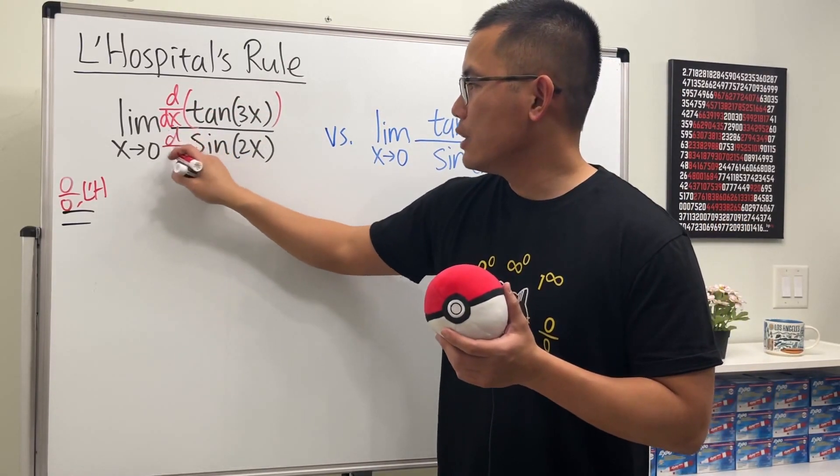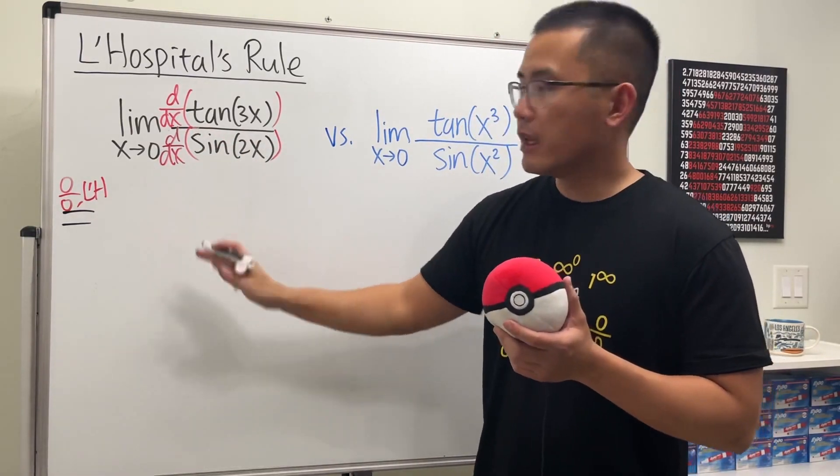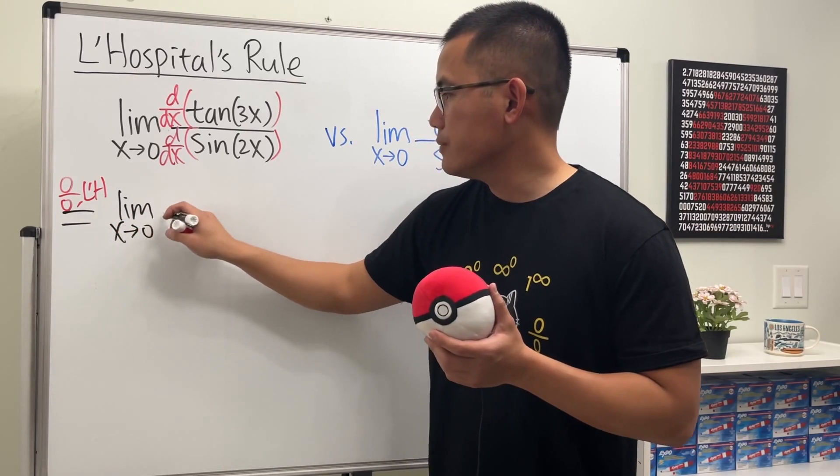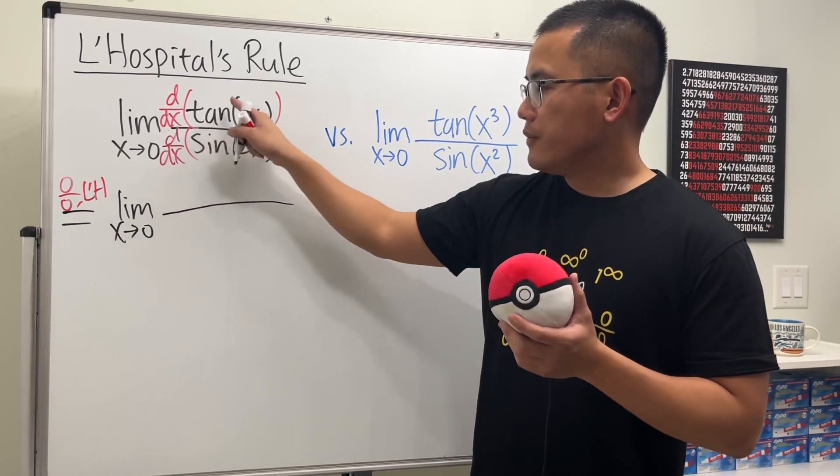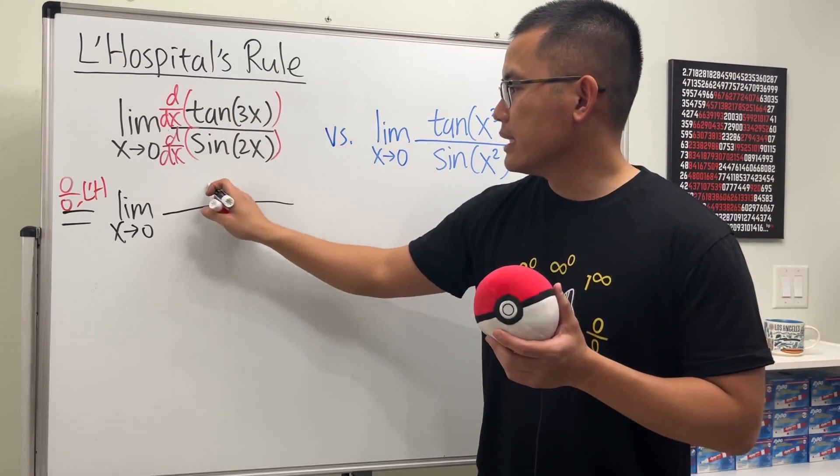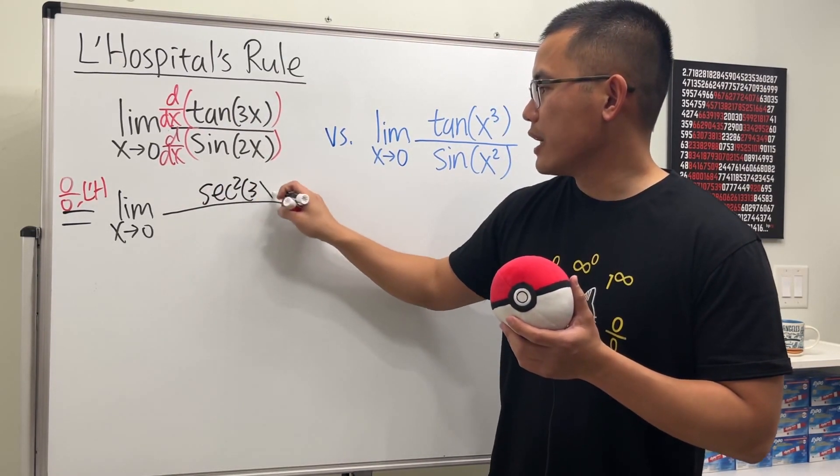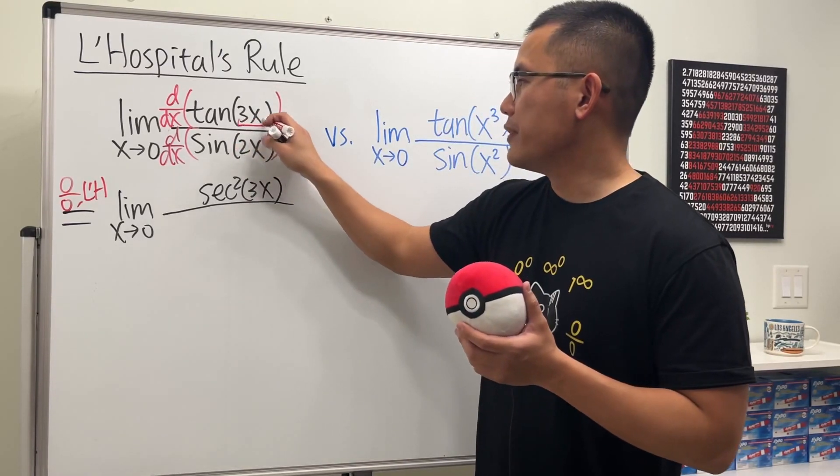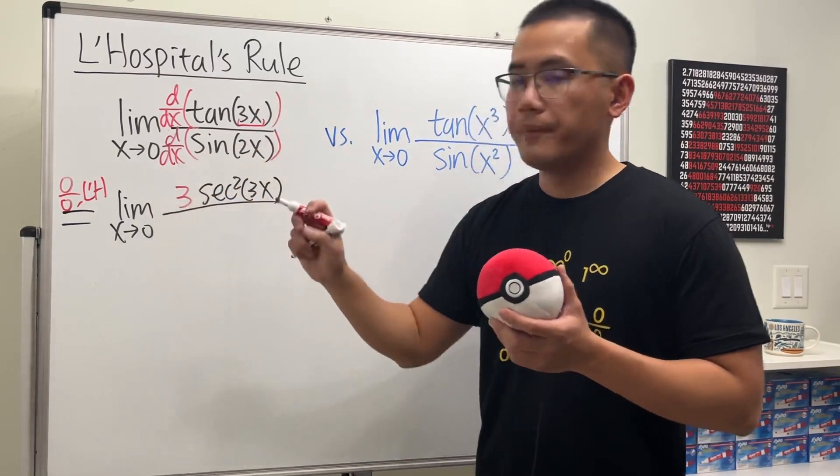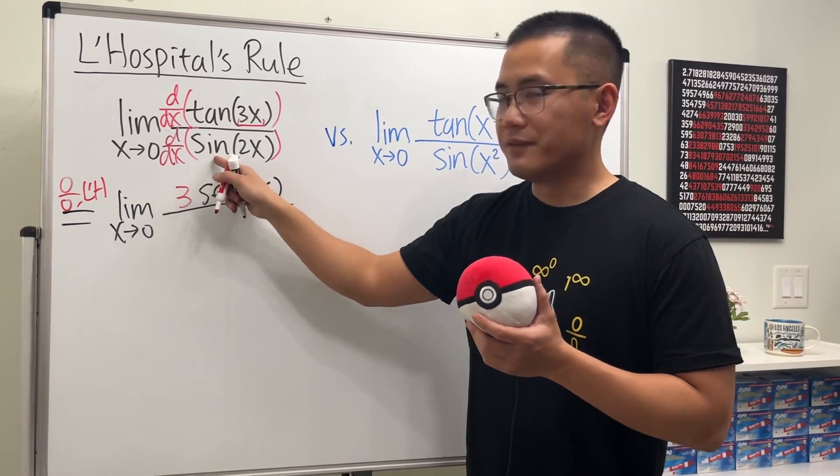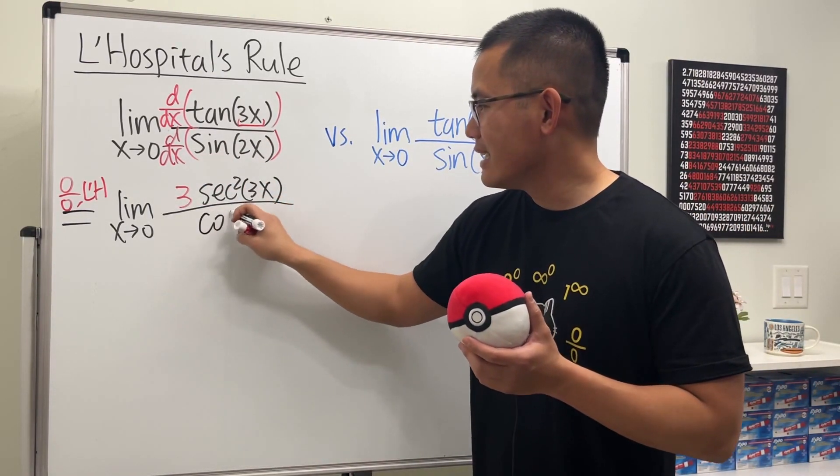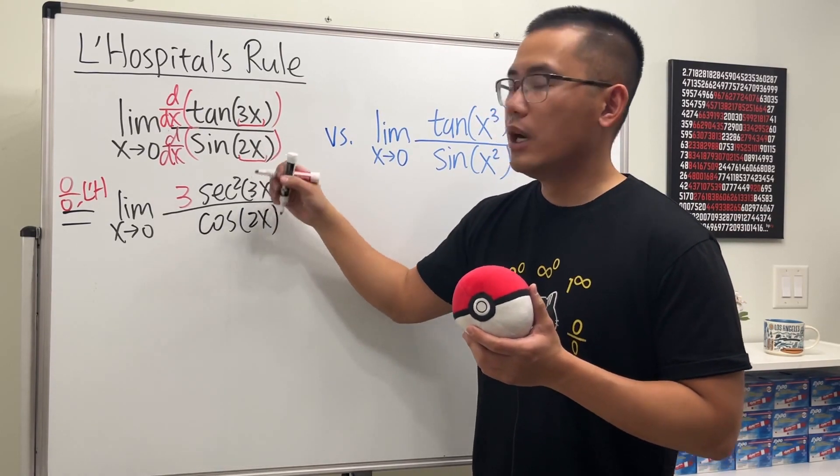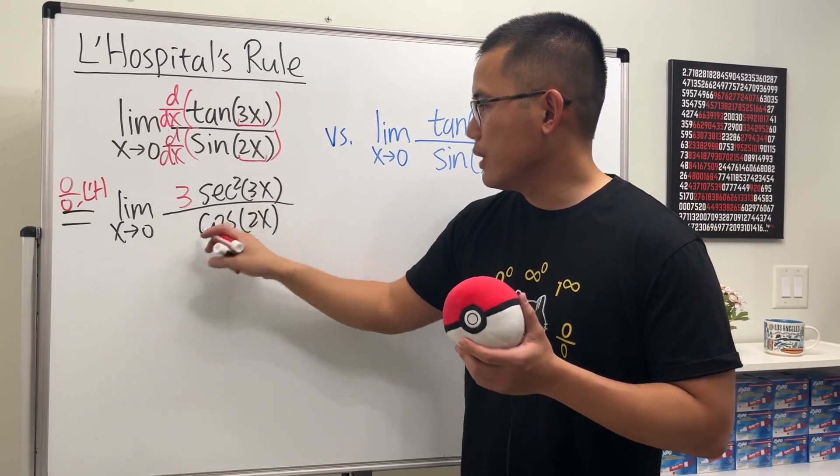Right here we get the limit as x approaching zero. Okay, differentiating tangent we get secant squared, and the input stays the same. And don't forget to use the chain rule—multiply by the derivative inside, and that will give us three. And then the bottom: the derivative of sine is cosine, and then here we have 2x. And again, use the chain rule—multiply by the derivative of 2x, which is 2.